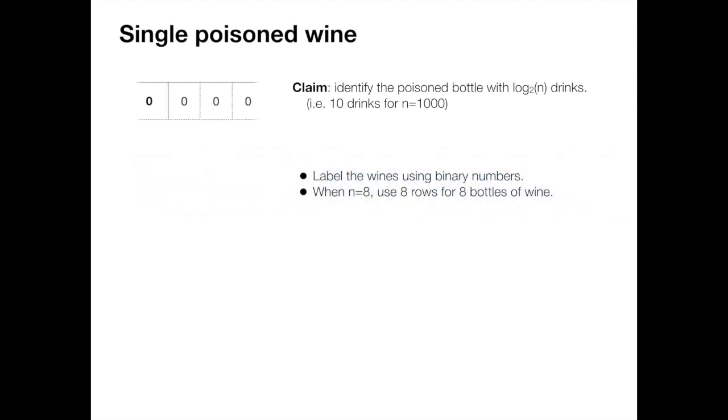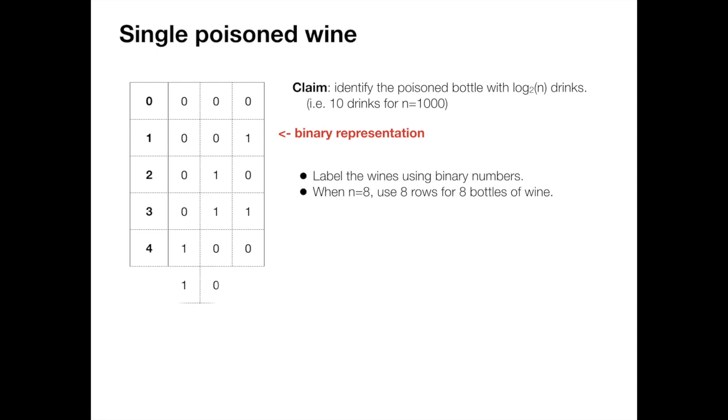So how to do that? We start by labeling the wines with binary numbers. For example, if we have eight bottles, we can use three-digit binary numbers to represent them. So here each row corresponds to one bottle of wine.